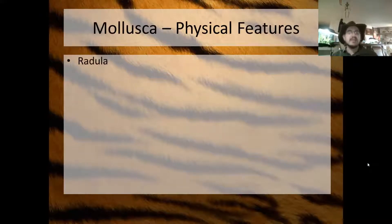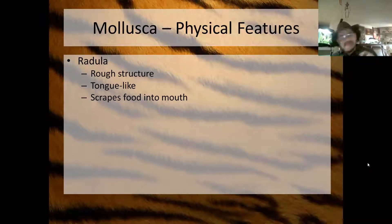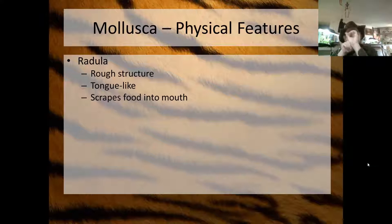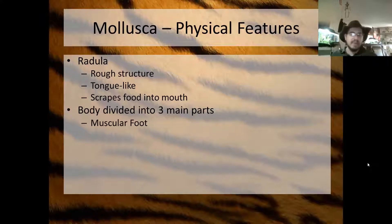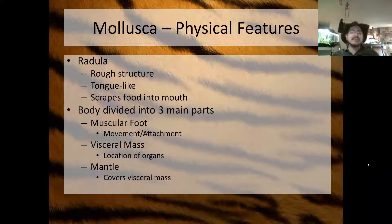Let's look at some physical features common to all molluscs. All molluscs have the radula, a rough tongue-like structure that scrapes food into the mouth — kind of like sandpaper. The body is divided into three main parts: the muscular foot for movement or attachment; the visceral mass, where all the organs are; and the mantle, which covers the visceral mass and secretes the calcium carbonate shell.